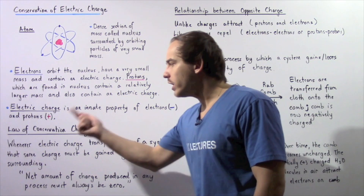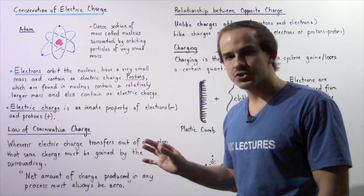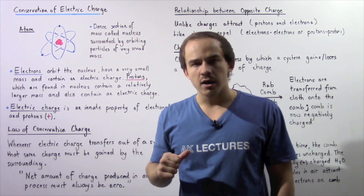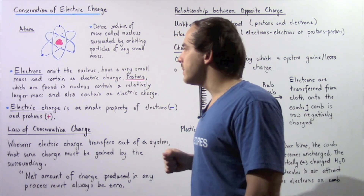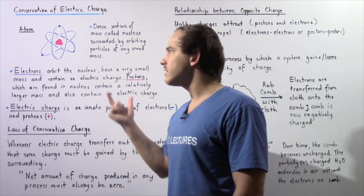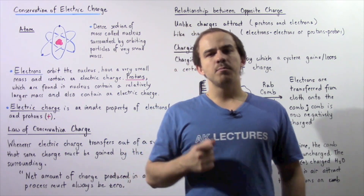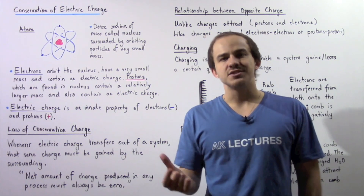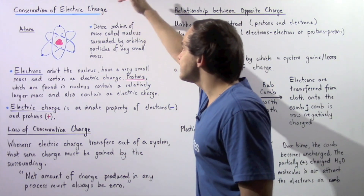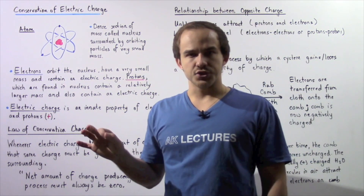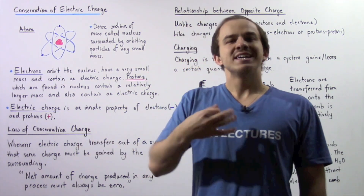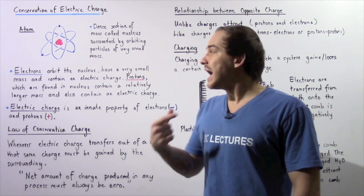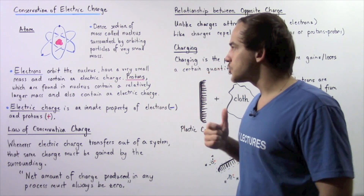Before we state what the law of conservation of charge tells us, let's define what electric charge is and where it comes from. Let's begin by examining a simplified model of the atom. An atom is composed of three types of subatomic particles. We have protons and neutrons located in a dense section of mass called the nucleus. Protons carry electric charge while neutrons do not, so we're not going to discuss neutrons in this lecture.